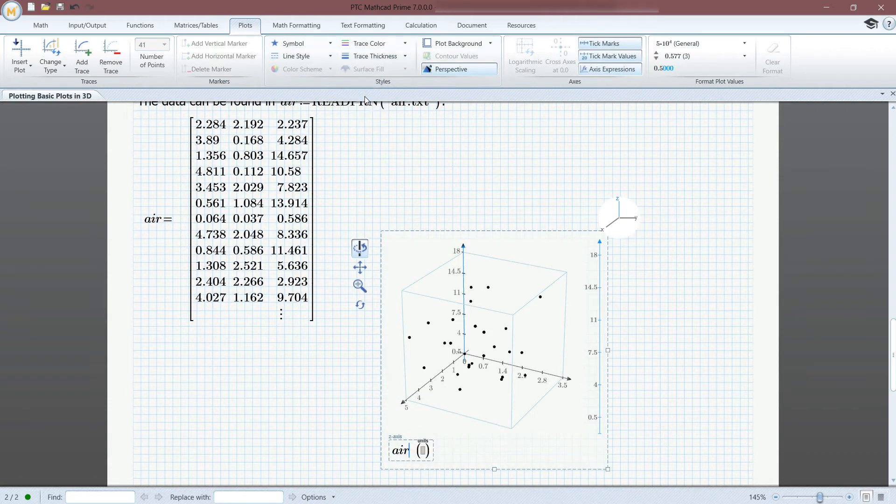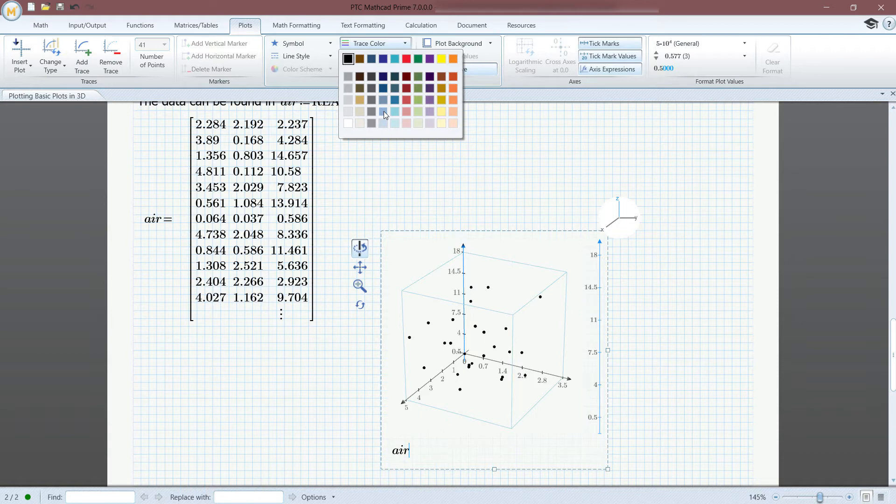Again, you can change the color and thickness if you'd like. If you choose, you can connect the points with a line as well.